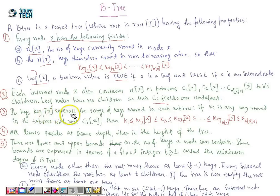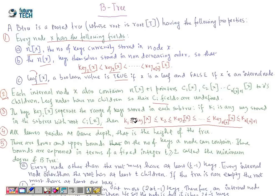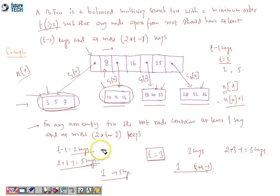The keys key_i of x separate the ranges of keys stored in each subtree. If ki is any key stored in the subtree with root ci of x, then all keys in subtree 1 should be less than or equal to key 1 of x, which should be less than or equal to key 2 of x, and so on. We can see this here: all keys in the first subtree should be less than or equal to key 1, and all keys in the second subtree should be less than or equal to key 2.